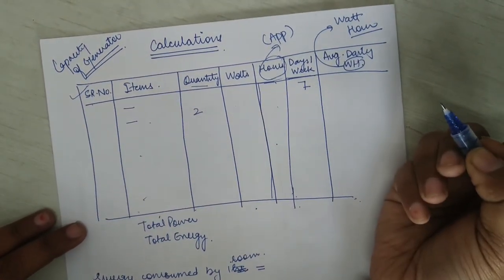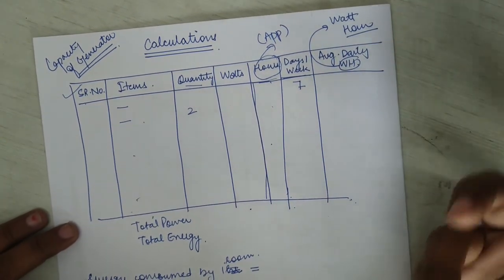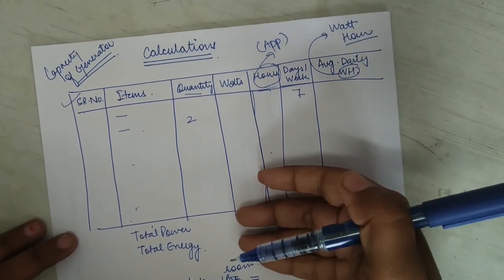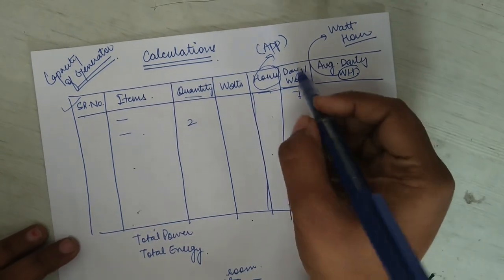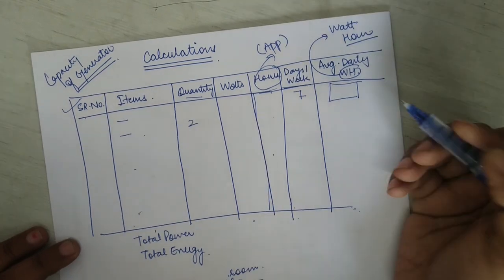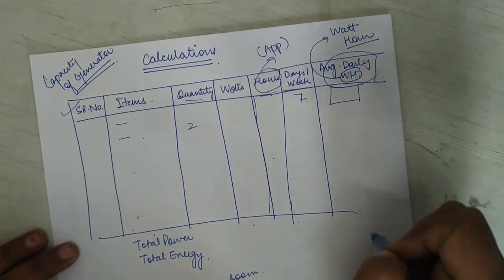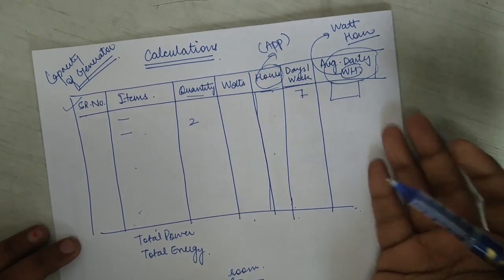Like if we talk about our houses only, then if we know that in our house we use that particular appliance for the whole of the week, then you can add seven days in a week. Or whatever the number of days according to commercial buildings—if there is a holiday on Sunday, then you will add six days in a week. According to that, you have to add the number of days. With that, you have to calculate the total amount of energy used and average daily amount of energy used in the day by multiplying these.